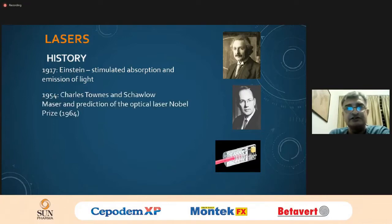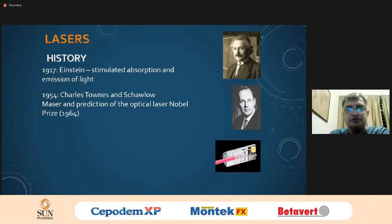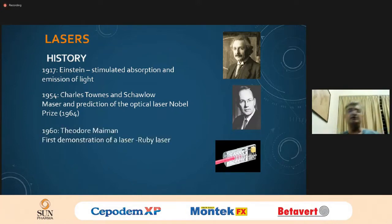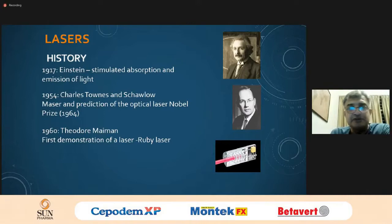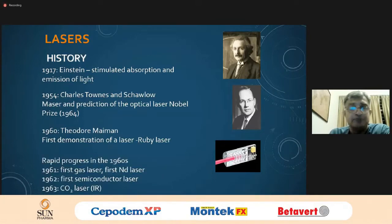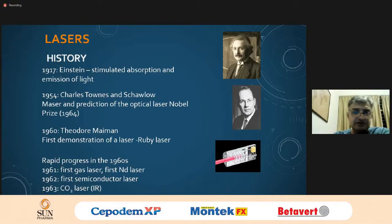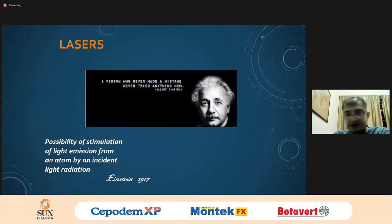The history of lasers goes back to Albert Einstein, as does a lot of physics in the 20th century. The concept of stimulated absorption of radiation, compounding light energy into extremely powerful light, resulted in the Nobel Prize for Townes and Schawlow. Thereafter, Theodore Maiman developed the first solid-state laser, the ruby laser. Progress in lasers was fairly exponential. The first gas laser was produced, then the semiconductor laser. It was only in 1963 that the carbon dioxide laser was developed.